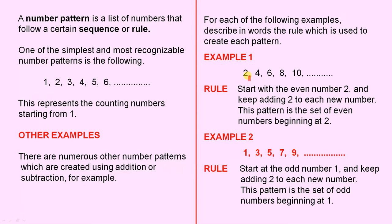Our first example is 2, 4, 6, 8, 10. Now if we look carefully, this is the rule: Start with the even number 2, and keep adding 2 to each new number. So 2 plus 2 gives you 4, 4 plus 2 gives you 6, 6 plus 2 gives you 8, 8 plus 2 gives you 10, and so on. This pattern is the set of even numbers beginning at 2.